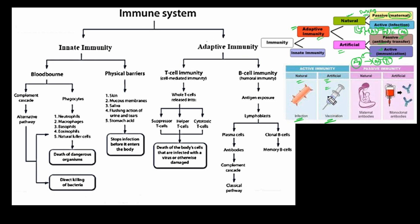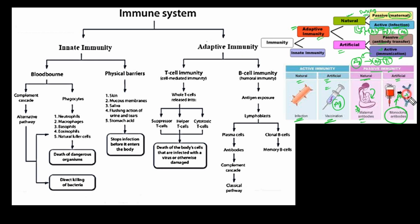To summarize the classification: active immunity, whether natural (through infection) or artificial (through vaccination), means our body is actively synthesizing a response against the antigen. Passive immunity means already preformed antibodies are inserted into our body — naturally from mother to fetus, or artificially through direct injection of monoclonal antibodies specific to one antigen, so our B cells do not need to produce antibodies for that particular antigen.